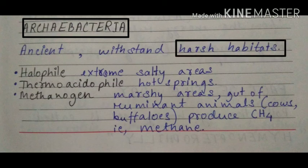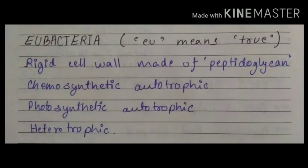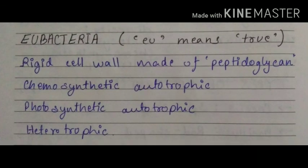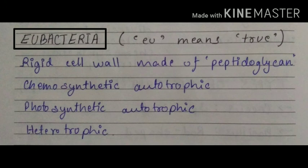Archaebacteria can withstand harsh habitats because of their different cell wall structure. Next, we will see about eubacteria. The word 'eu' means true, so these bacteria are considered true bacteria. They have a rigid cell wall made up of peptidoglycan. Their metabolic process may be chemosynthetic autotrophic, photosynthetic autotrophic, and even heterotrophic.